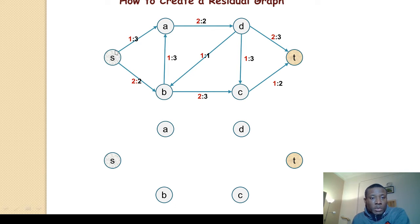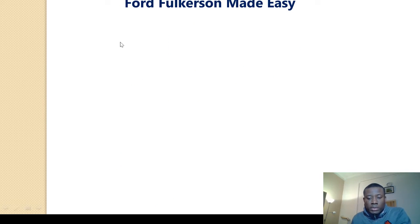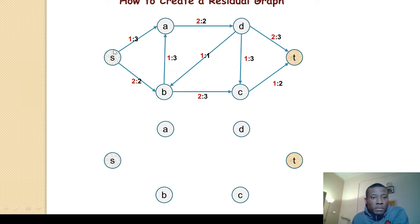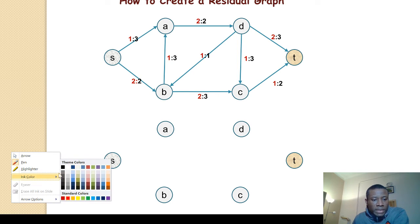One edge means you can push additional traffic. In this case it's 3 minus 1, which is 2. You can push 2 forward. You can also undo the already existing flow, which is 1. So you have a backward edge of 1 and a forward edge of 2. Let's go ahead and do that. If you find this difficult, just pause the video. Let me take another color.